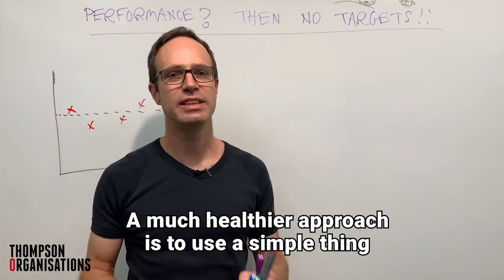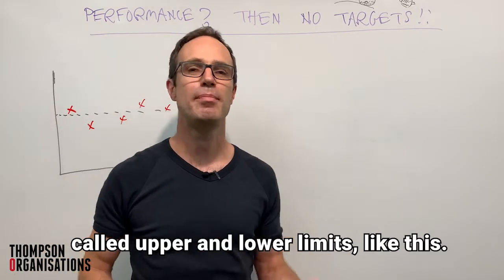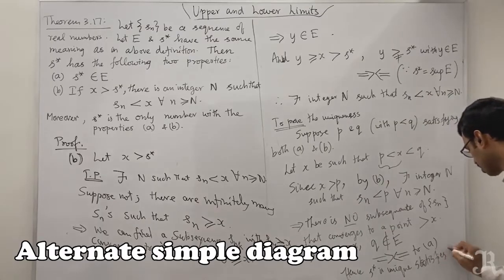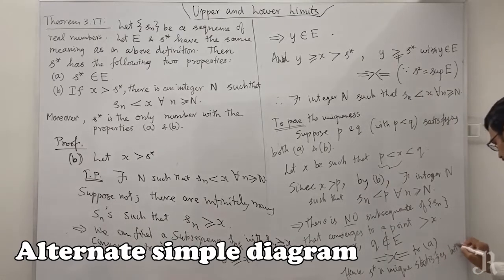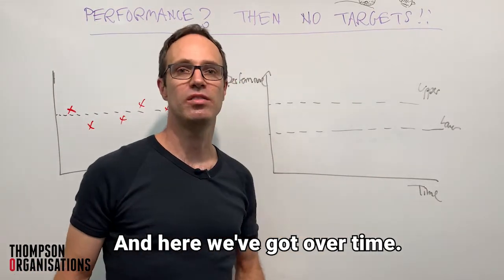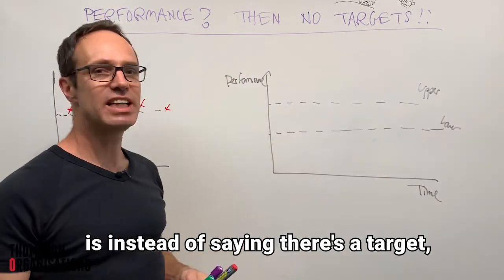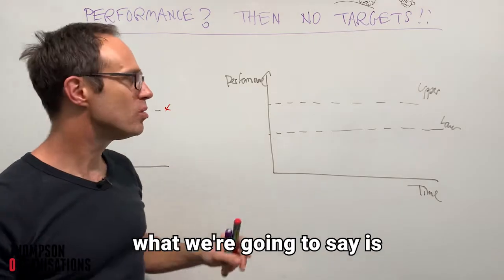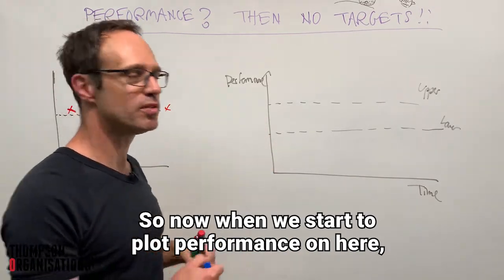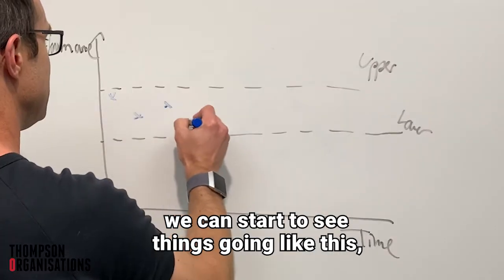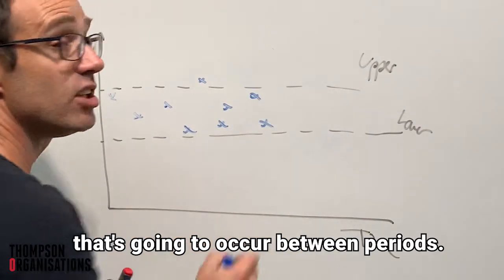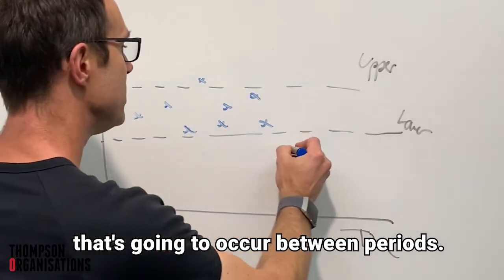A much healthier approach is to use a simple thing called upper and lower limits, like this very simple diagram. We've got performance — let's assume high is better — and over time. Instead of saying there's a target, what we're going to say is that there is an upper and a lower limit. So now when we start to plot performance on here, we can start to see things going like this, which is natural variation that's going to occur between periods.